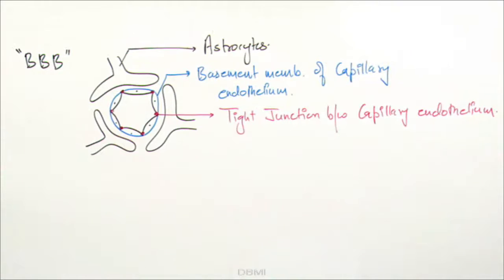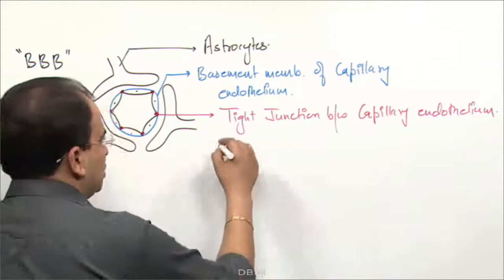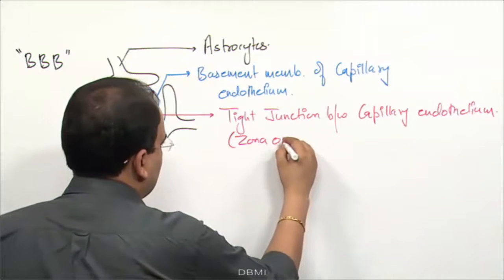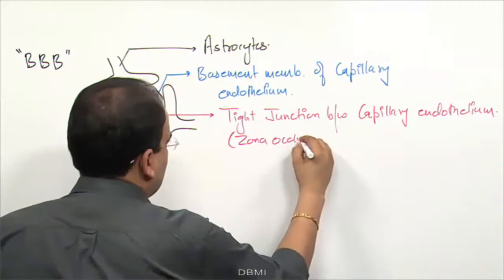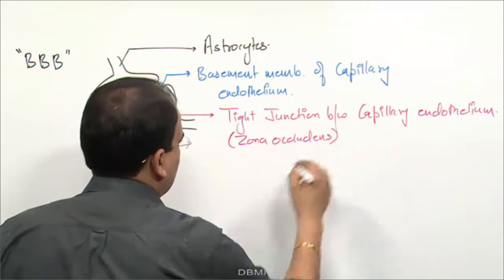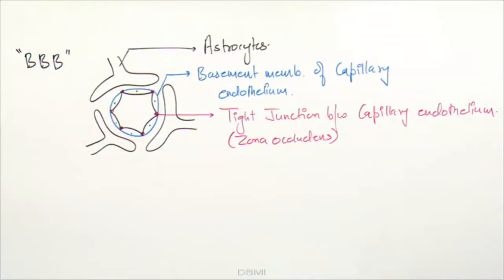We have three components for the blood brain barrier: the astrocytes, the basement membrane of capillary endothelium, and the tight junction. Tight junctions are also called zona occludens between the capillary endothelium.